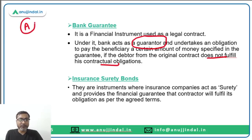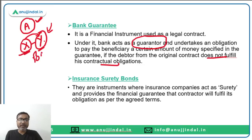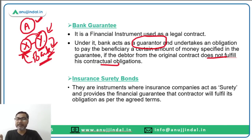For example, in a project, if X and Y are two parties — Y is the debtor who borrowed money from X the creditor — and Y fails to complete the project or return the funds, then Y would get a bank guarantee. The bank will pay the amount back to X. That is the meaning of bank guarantee.